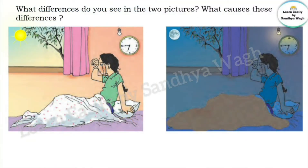Now, what differences do you see in the two pictures? What causes these differences? In the first picture, it is morning — 6:45 a.m., as you can see the time shown in the clock. When the sun rises, we get light from the sun.